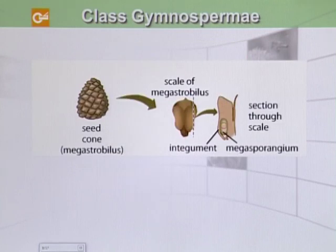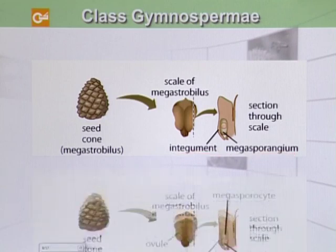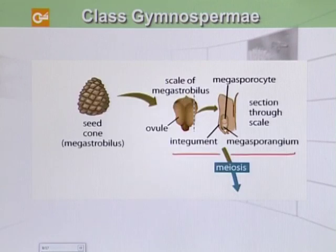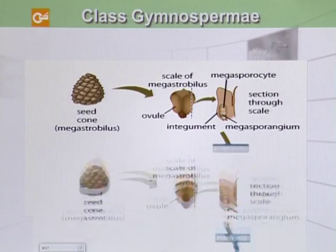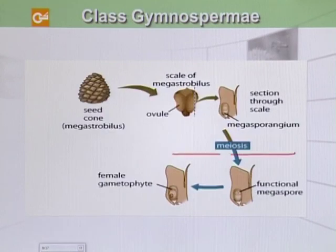The seed cone or mega strobili is comparatively larger in size; it is covered by an integument and comprises a megasporangium. Inside the megasporangium, meiosis occurs and four cells are formed. Out of these four cells, one remains functional, which is called the functional megaspore. This functional megaspore undergoes mitosis to form the female gametophyte.